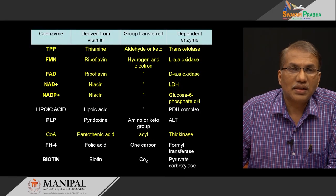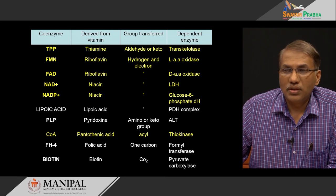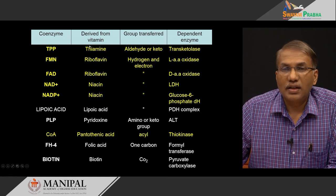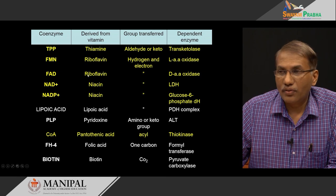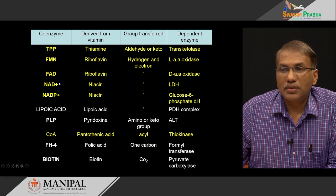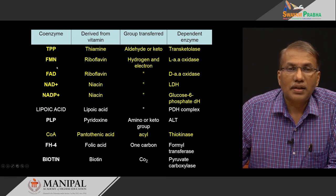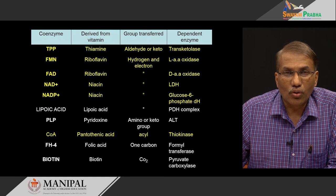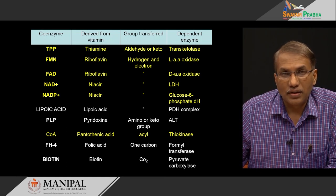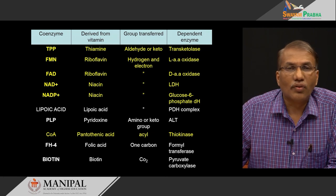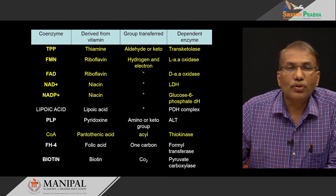This table contains various coenzymes - the active coenzyme forms are in the first column, the second shows the respective vitamins from which they are formed, and what chemical groups they transport. Some coenzymes highlighted in yellow predominantly participate in energy-generating processes. There are some more vitamins which, even though they may not directly participate in energy generation, are very much required for our survival.